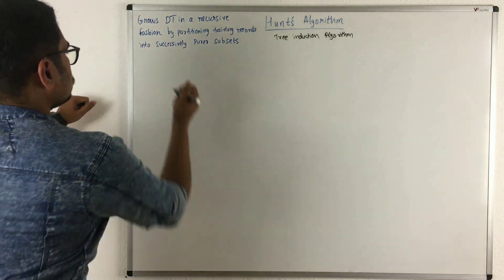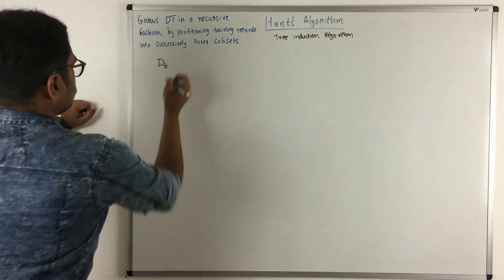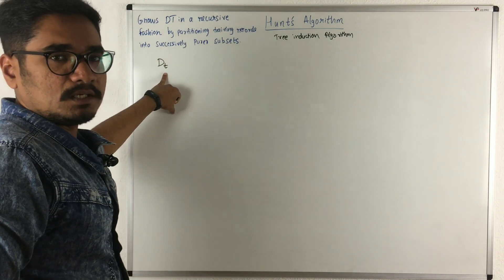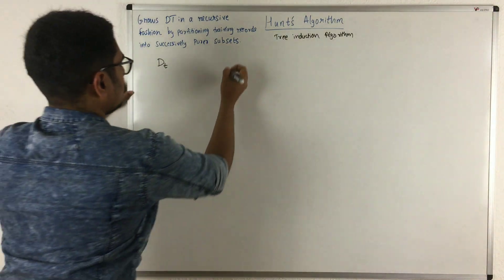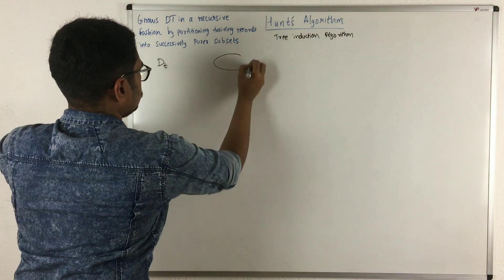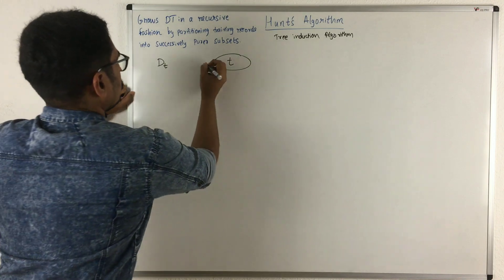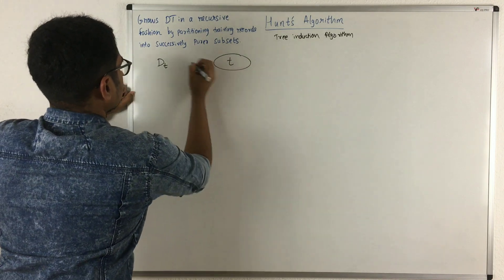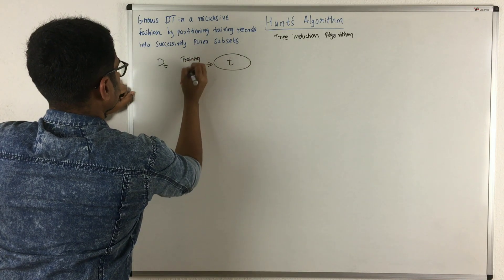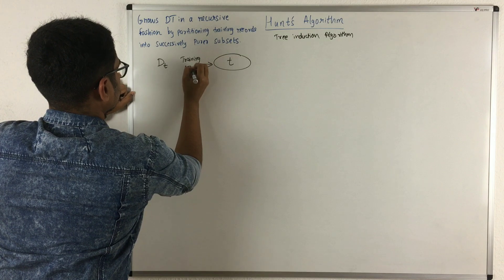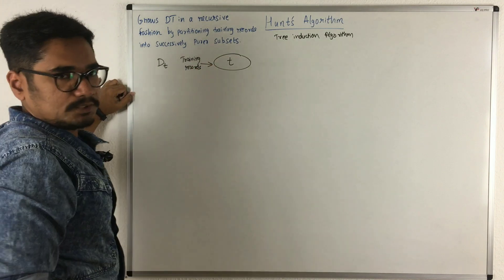For example, consider this representation: Dt represents the training records at node t. A node in the decision tree is represented in this way, and to this node you apply training records for constructing your decision tree.